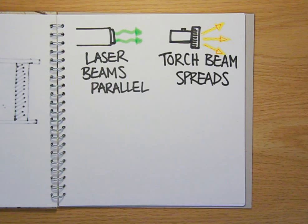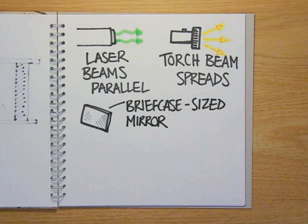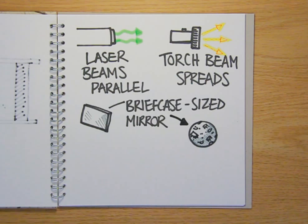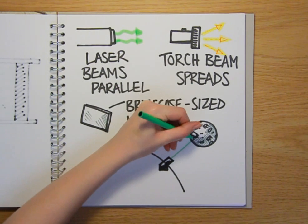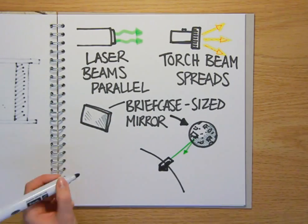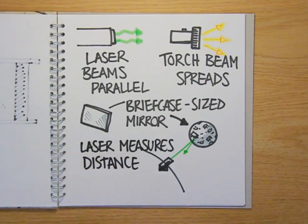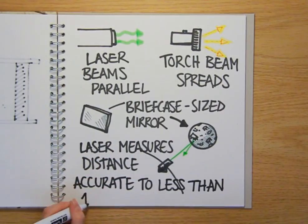In fact, the beam is so straight that a briefcase-sized mirror left behind on the lunar surface by the Apollo astronauts in the 1970s is still used on a daily basis to reflect a laser beam back to Earth in order to accurately measure the distance to the Moon to a precision of less than one millimeter.